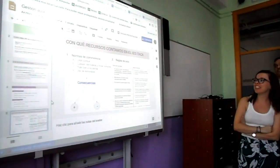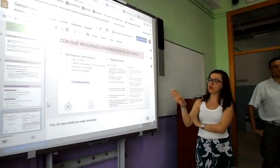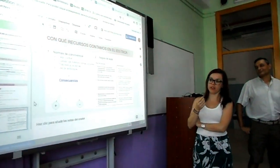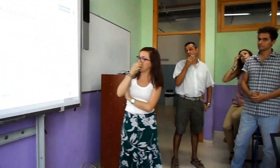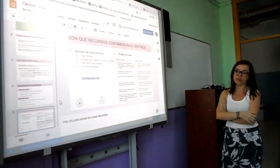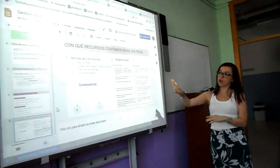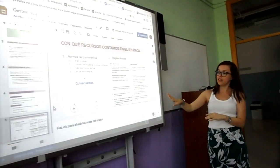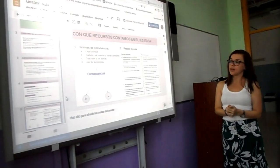Para terminar, con todos los principios básicos que comentan los compañeros, queremos decir cuáles son los recursos con los que contamos en nuestro centro para implementar este tipo de gestión en el aula. En primer lugar, contamos con normas de convivencia: llegar puntual, el cuidado del material en las zonas comunes, tratar bien a los demás, o el uso de tecnología con fines educativos. Todas estas normas tienen asociadas unas consecuencias positivas o negativas en función del comportamiento del alumno.